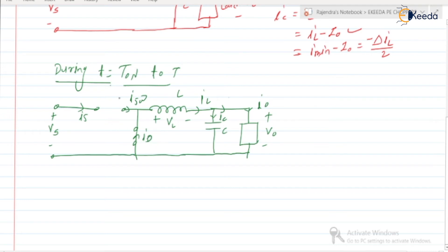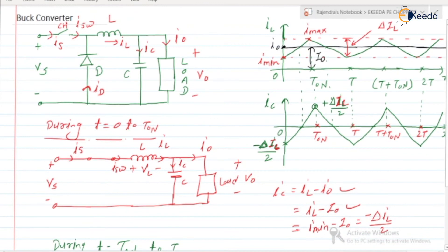When the switch is in the OFF state (T_ON to T), whatever energy was stored by the inductor is released through the load. We can write IL = IC + I0, but since I0 is constant, IC = IL − I0. Inductor releasing energy means inductor current decreases from I_max to I_min.